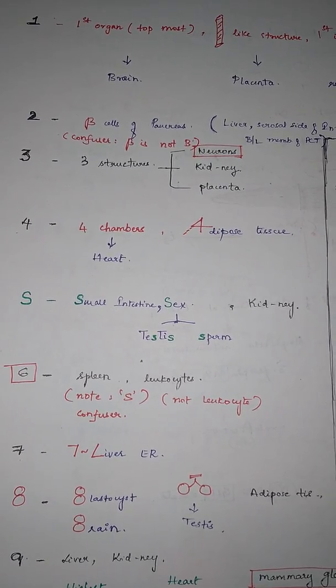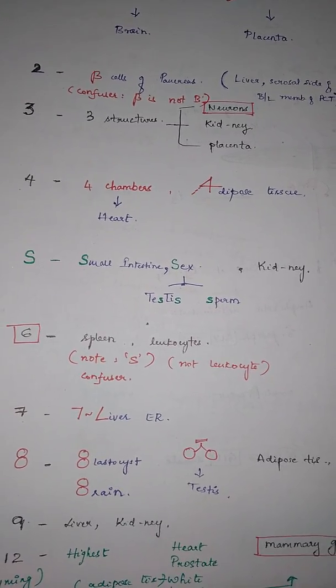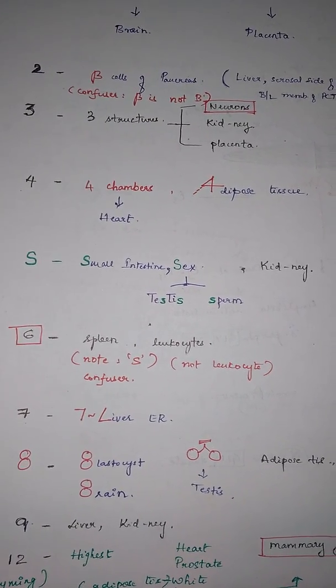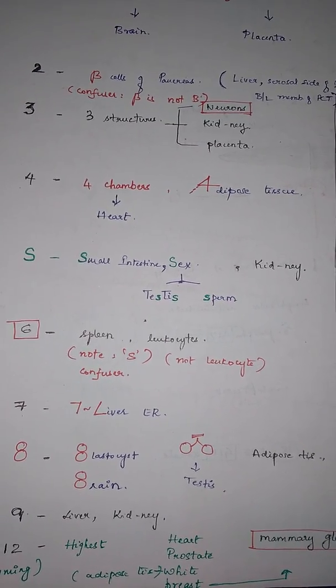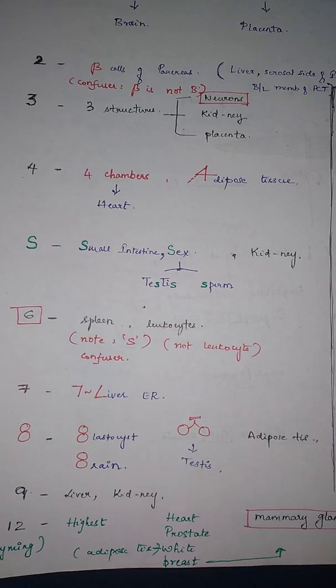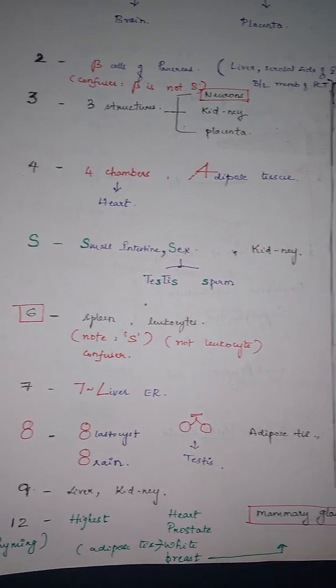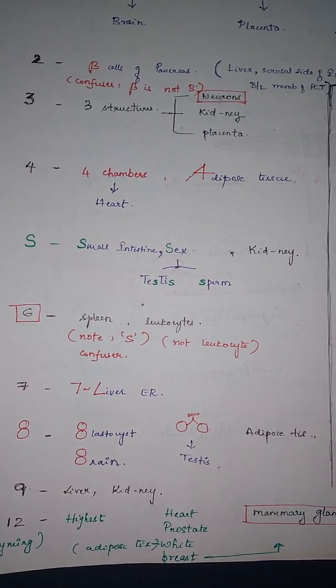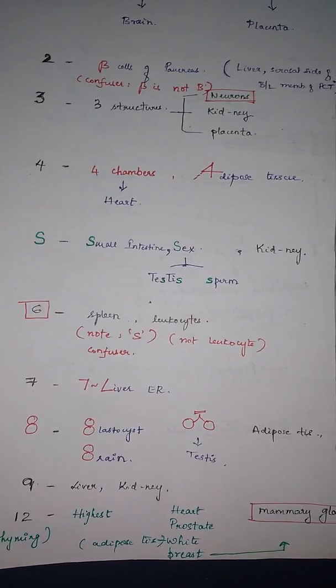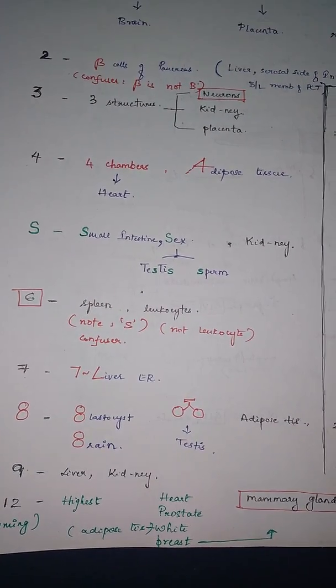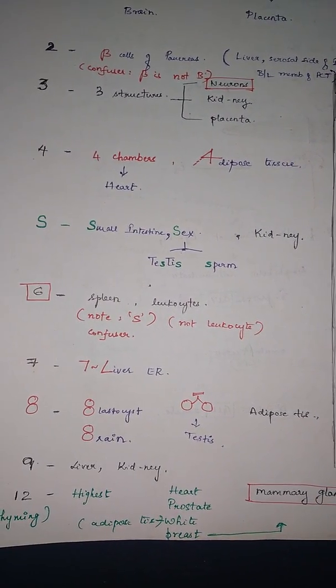Four, we have four chambers, that is the heart, and phone number. As you can see, A stands for adipose tissue. And five, it can be written like S, that is small intestine, and sex, which can be related to testes and sperm, and also we have kidney for five.